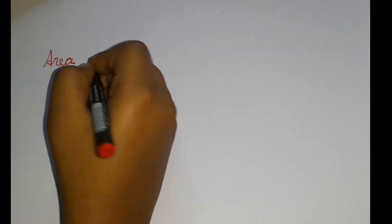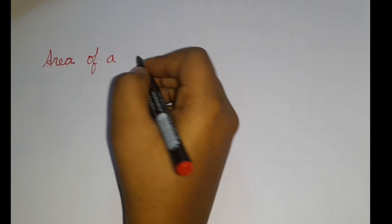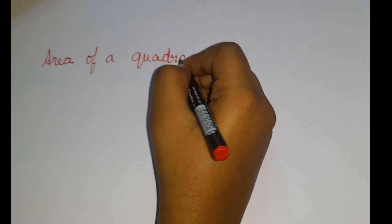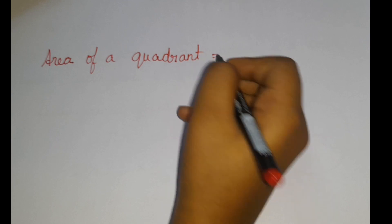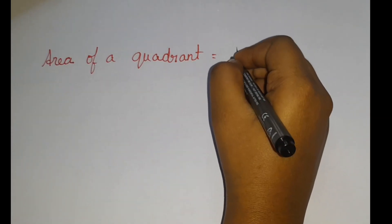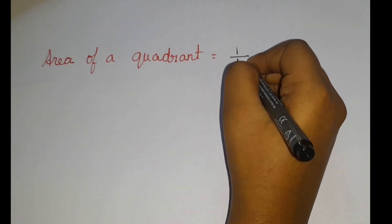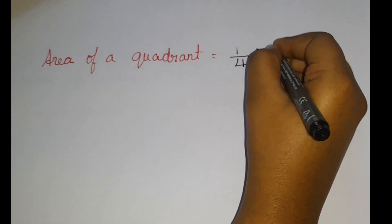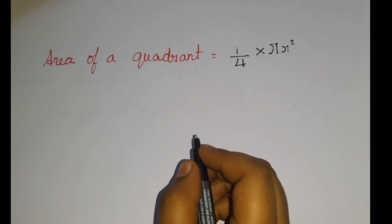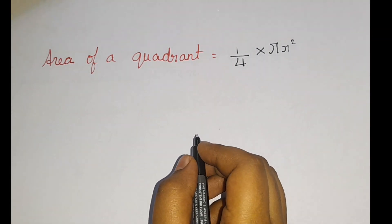So what is the area of a quadrant? Let us write: area of a quadrant. The formula is 1/4 × πr². Please remember this — this is a really important formula.